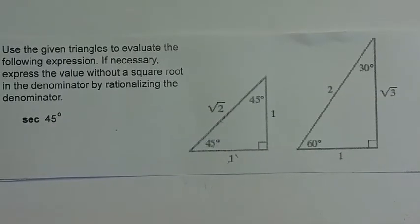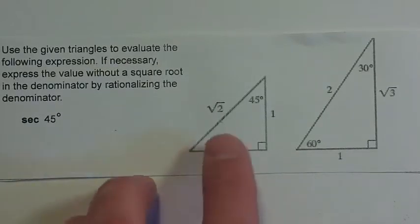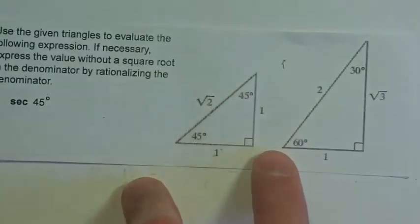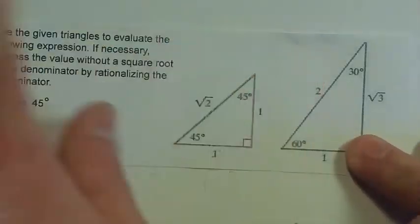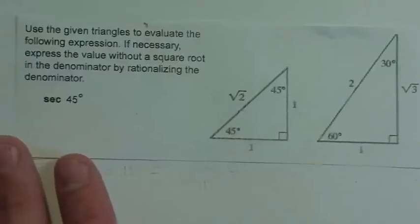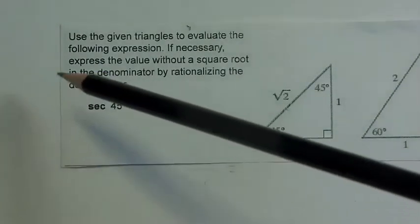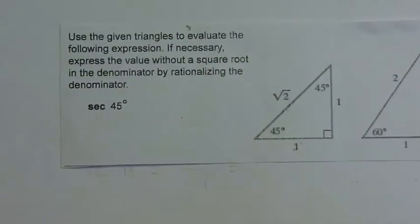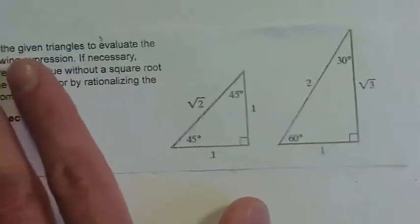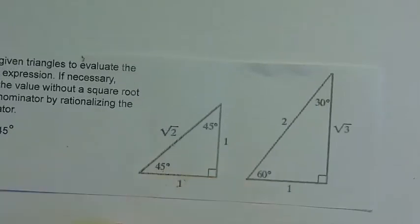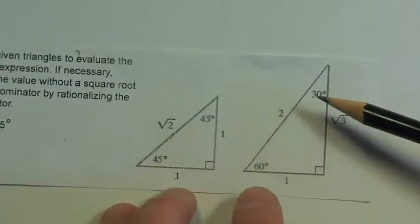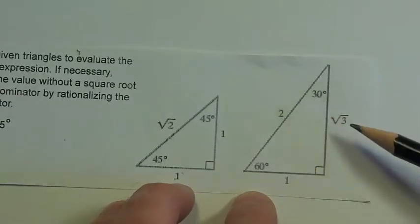Now we're going to look at two special triangles: a 45-45-90 triangle and a 30-60-90 triangle. These are two of our really nice triangles that we base a lot of trig properties on. The directions say to use the given triangles to evaluate the following expressions, and if necessary, rationalize the denominator — so whenever we have square root of 2 or square root of 3 showing up, we don't want it in the denominator. Also, when we're dealing with 30 degrees, we need to be careful about which side is opposite and which is adjacent.